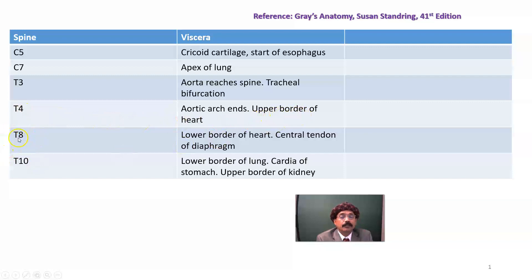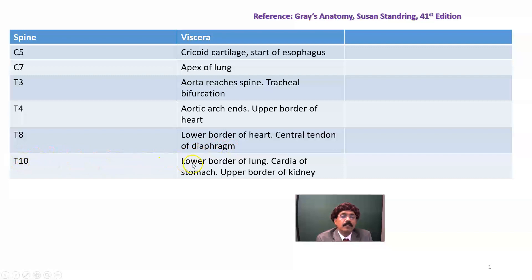At the spinous process of T8, thoracic vertebra 8, spinous process level, we will get the lower border of the heart and the central tendon of the diaphragm. At the level of T10, the spine of the 10th thoracic vertebra, we get the lower border of the lung.